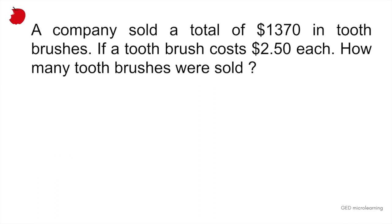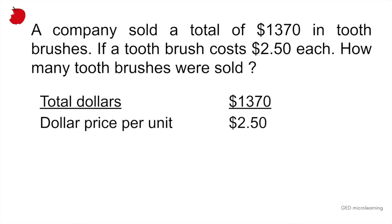Alright, so what you're going to do here is first of all look at the total number of dollars sold, which was $1,370, and divide by the dollar price per unit. We know that it's $2.50 per toothbrush, and that's going to give you the number of units or brushes sold, which in this case is 548. Answer B.